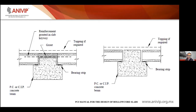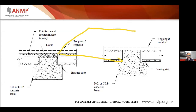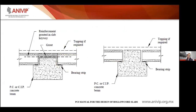Vemos una trave muy común con sus ménsulas para recibir las placas alveolares. En algunos países se coloca un acero que parece bastón, el cual no va embebido en el firme sino que durante la fabricación de la placa alveolar se hacen unas ranuras y ahí se colocan estos aceros. No es muy común pero se puede utilizar. Esta es una conexión simplemente apoyada.